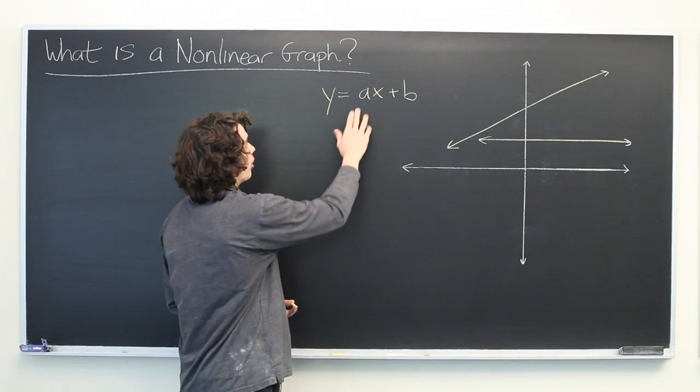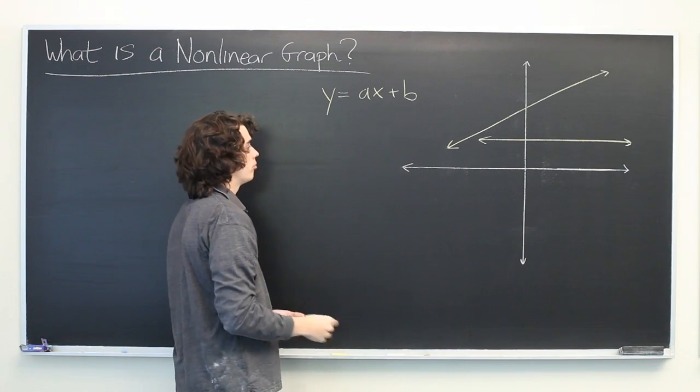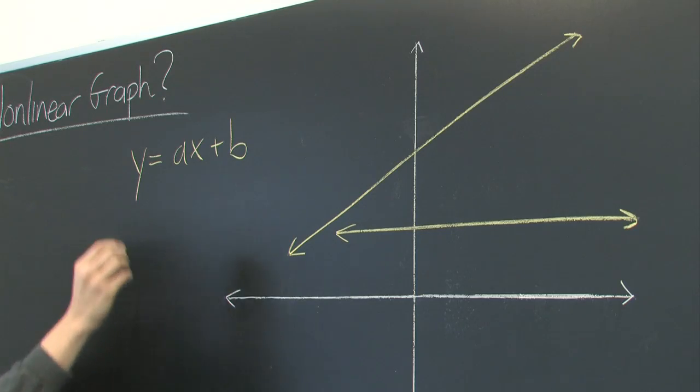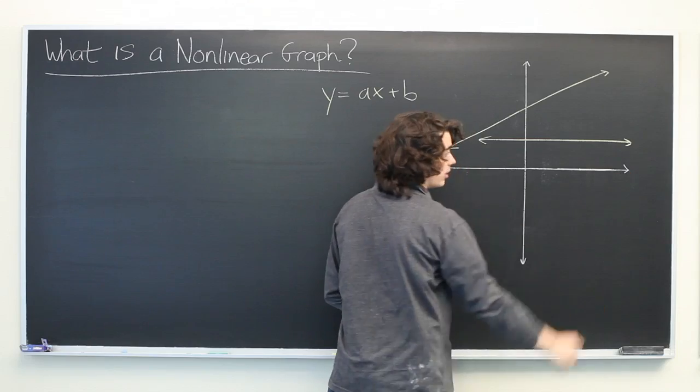For example, if you were to have both a and b set to zero, then you would just get y equals zero, which is simply the x-axis.